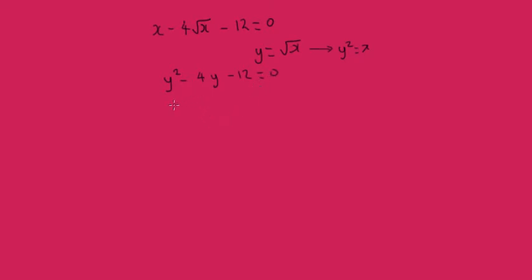And now we can just solve this as a quadratic equation. So we've got minus 12 and minus 4. So 6 times 2 is 12. So we can have y and a y minus 6. Plus 2 is going to give us minus 4 equals 0.